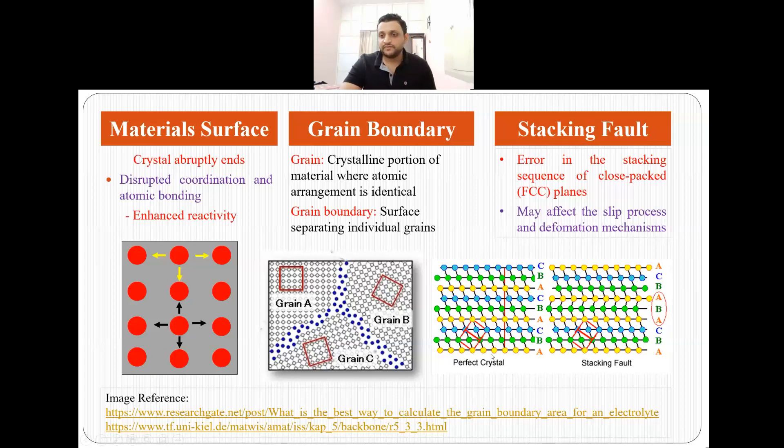Then this kind of defect is what we call as stacking fault and these stacking faults are seen in close packed FCC planes. Now why they are called defects? Because they affect the slip process and the deformation mechanisms in a material. So when we talk about surface defects we mostly talk about material surface, grain boundary, and stacking fault because these are the major defects found in any material.